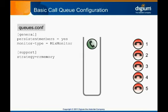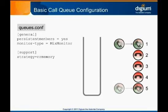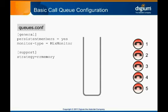For our example, we'll use RR Memory. This strategy maintains an order to the queue members, and when attempting to deliver a new call, it remembers where it left off in the previous attempt. If member number four received the last call, then it won't receive another call until all of the other members have been rung. This makes it so that on average, all available members are tried with about the same frequency. We'll also set a wrap-up time for this queue. Wrap-up time is a grace period given to a queue member at the end of a call — even though the member is off the phone, the system waits for the wrap-up time to complete before considering them available for another call.